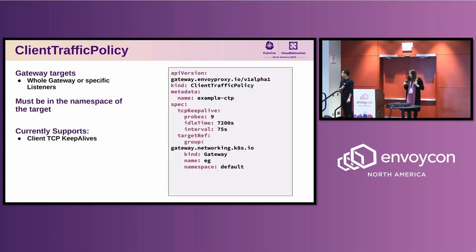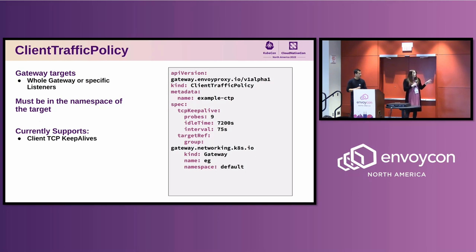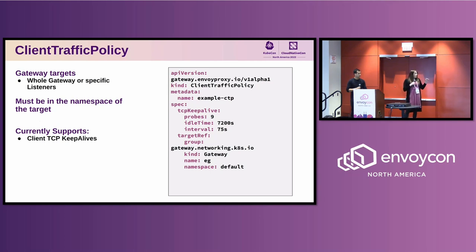The first of these resources is called the Client Traffic Policy. This consolidates all configuration about how Envoy proxy talks to downstream clients. We've added support for a brand new feature in this latest release: TCP Keep Alives. These policy resources must be in the same namespace as whatever they're targeting. This one targets gateways only — you can target the entire gateway to set blanket defaults, or you can target specific listeners by setting a section name to have different configurations for different listeners on that gateway.